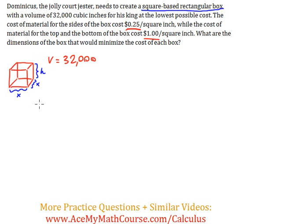The volume needs to be 32,000 cubic inches. For a rectangular box with these dimensions, the volume is x times x times h, or x²h. So 32,000 = x²h.